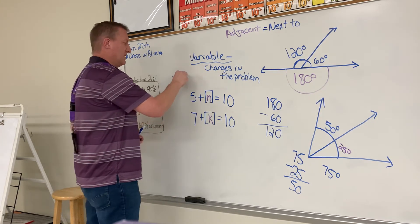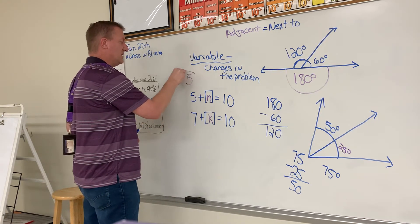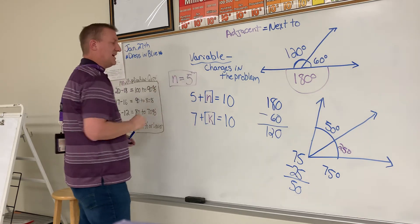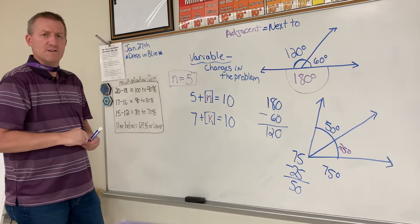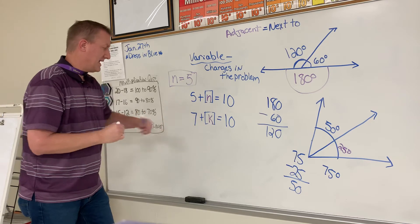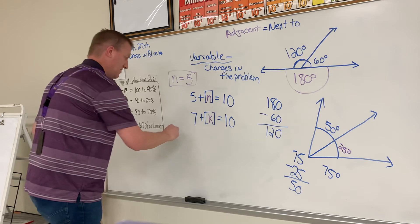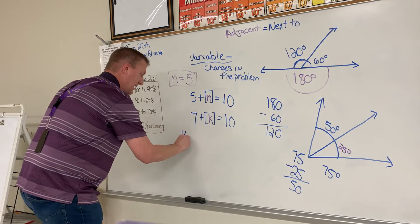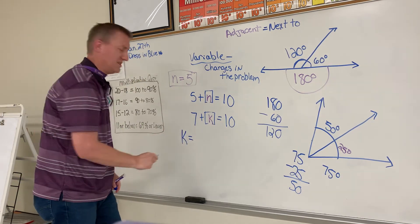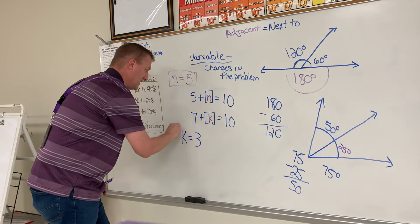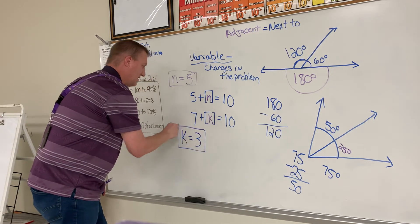Okay, so they'll say 5 plus n equals 10. So what is n? So n equals what? 5 plus what equals 10? Well, in this one the variable is 5, isn't it? Okay. How about the k down here? 7 plus k equals 10. k equals 3. That's the variable.